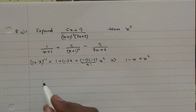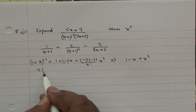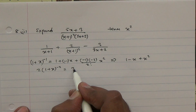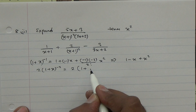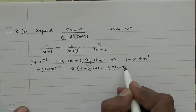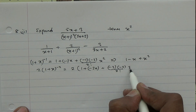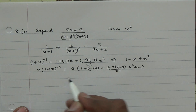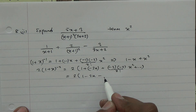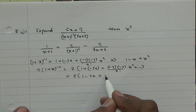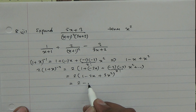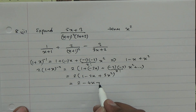For the second term, 2 over (x plus 1) squared is 2 times (1 plus x) to the power of minus 2. Expanding: 2 times (1 plus (minus 2)x plus (minus 2)(minus 3) over 2 factorial times x squared), which gives 2 times (1 minus 2x plus 3x squared), resulting in 2 minus 4x plus 6x squared.